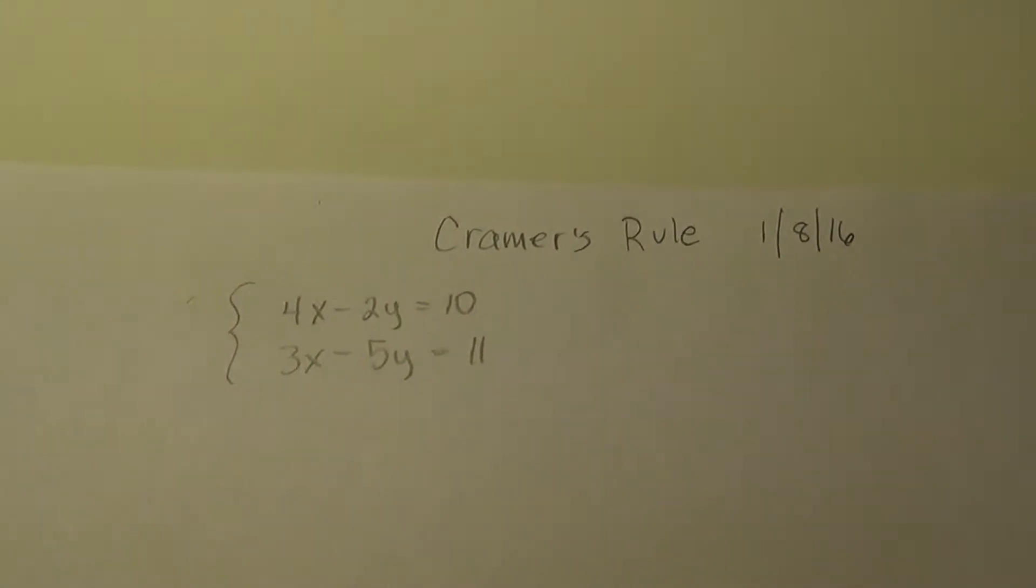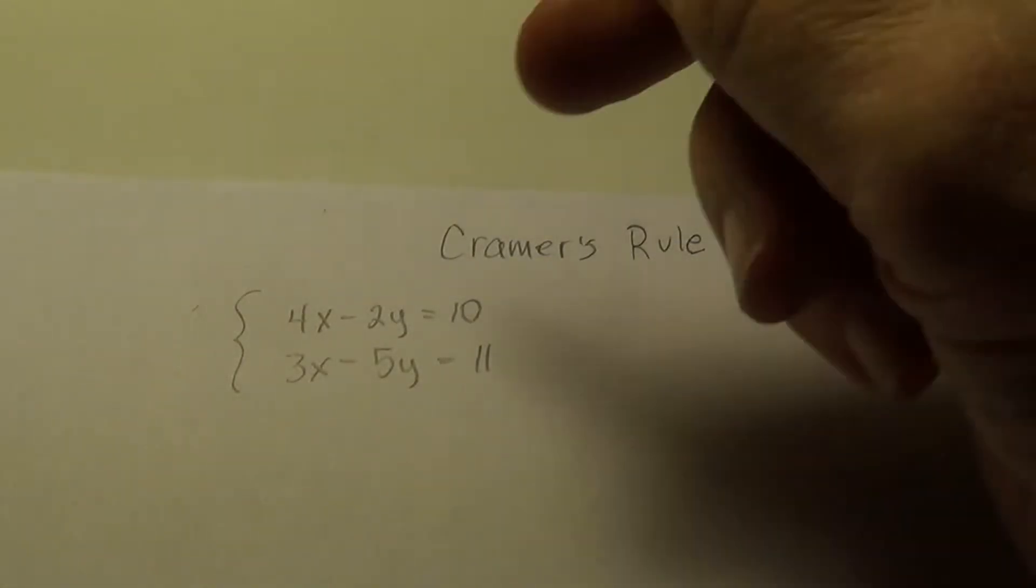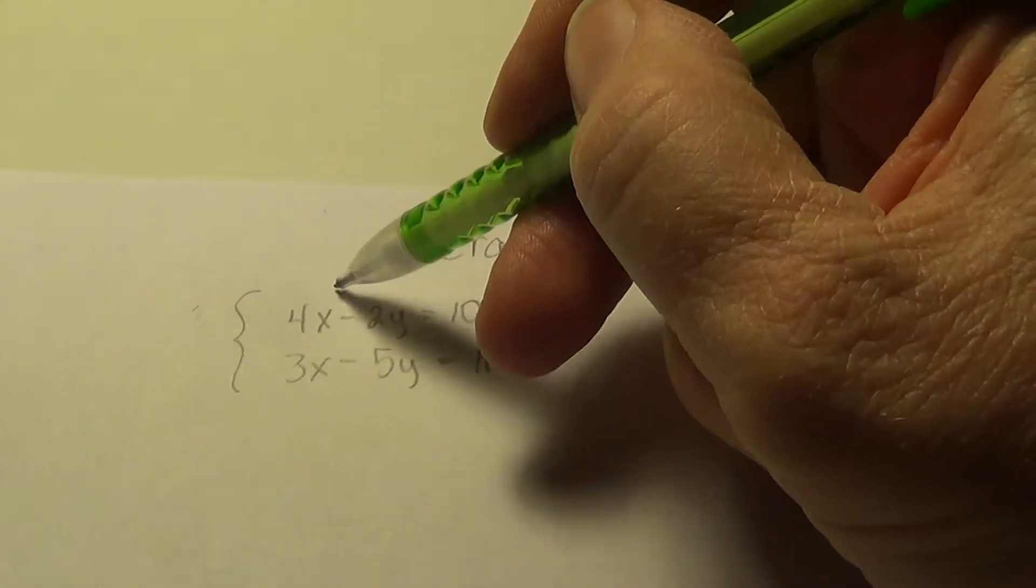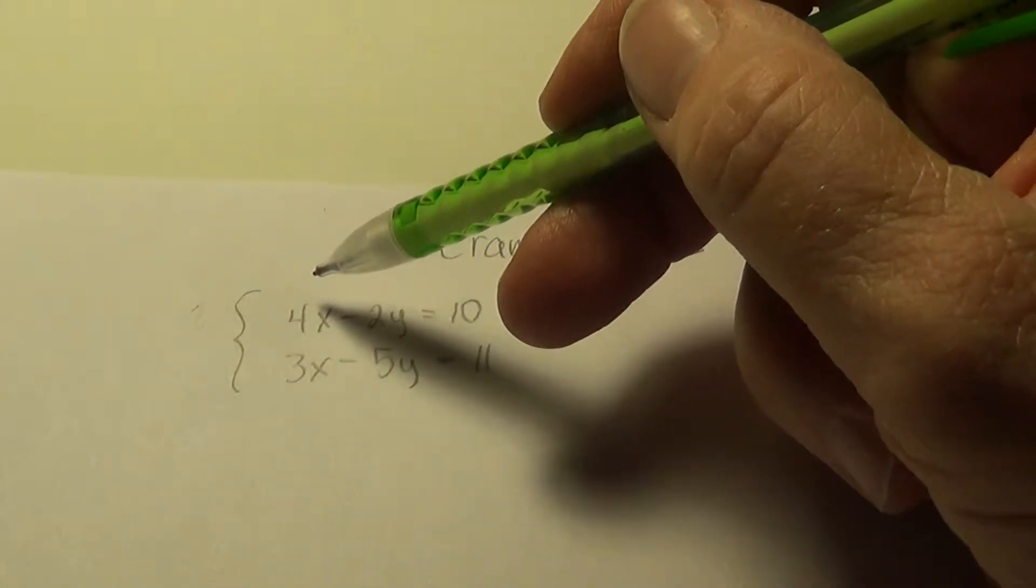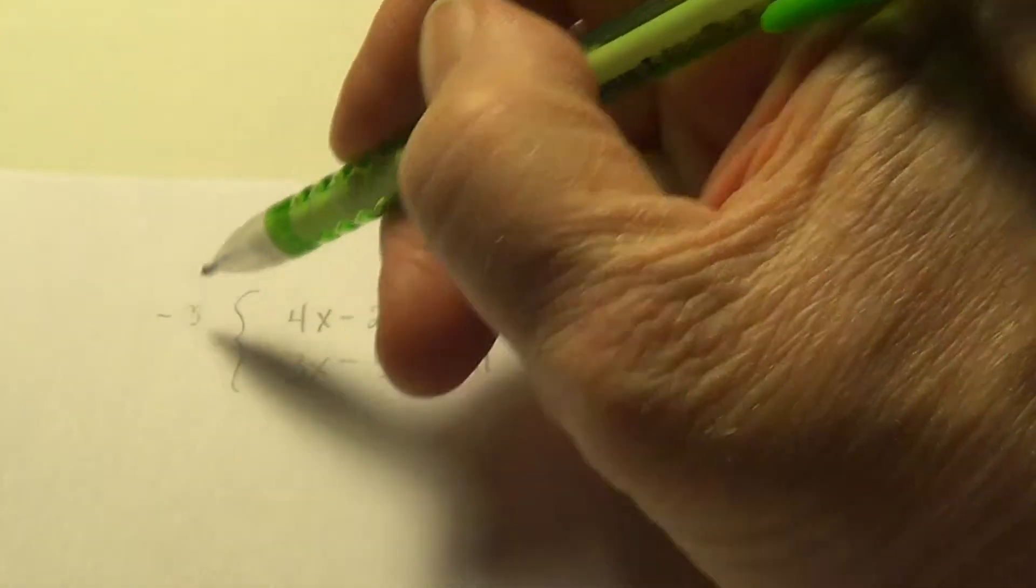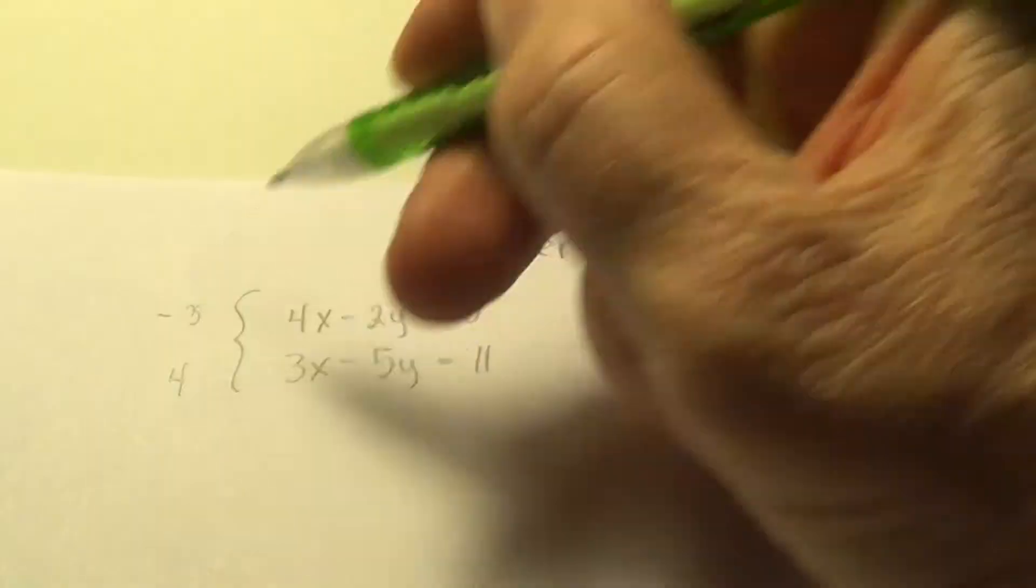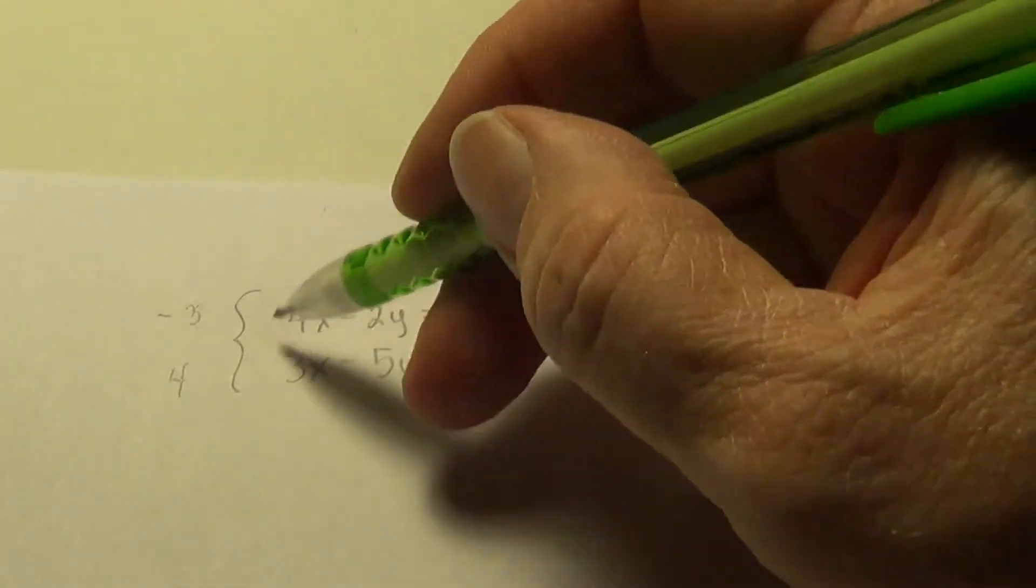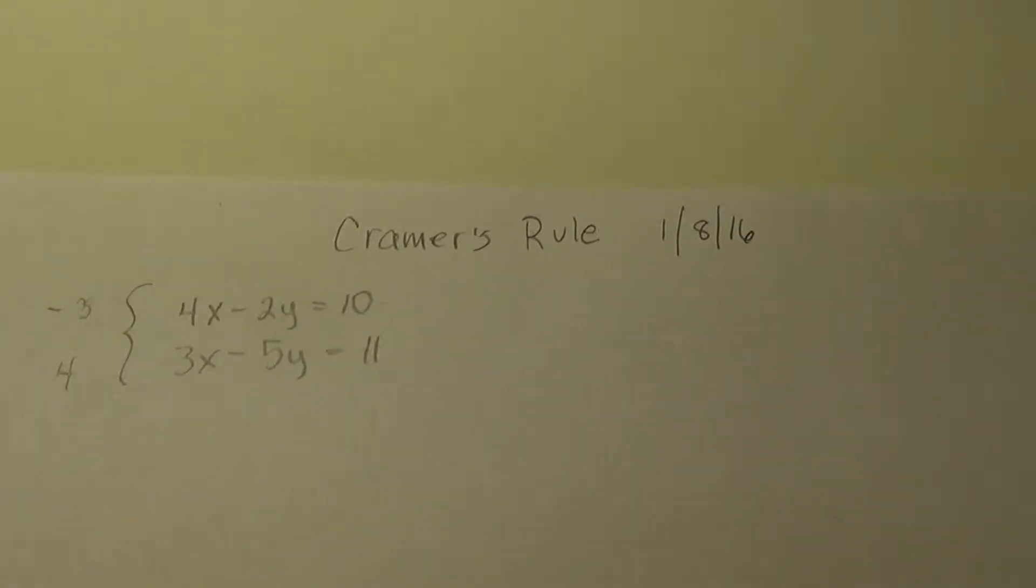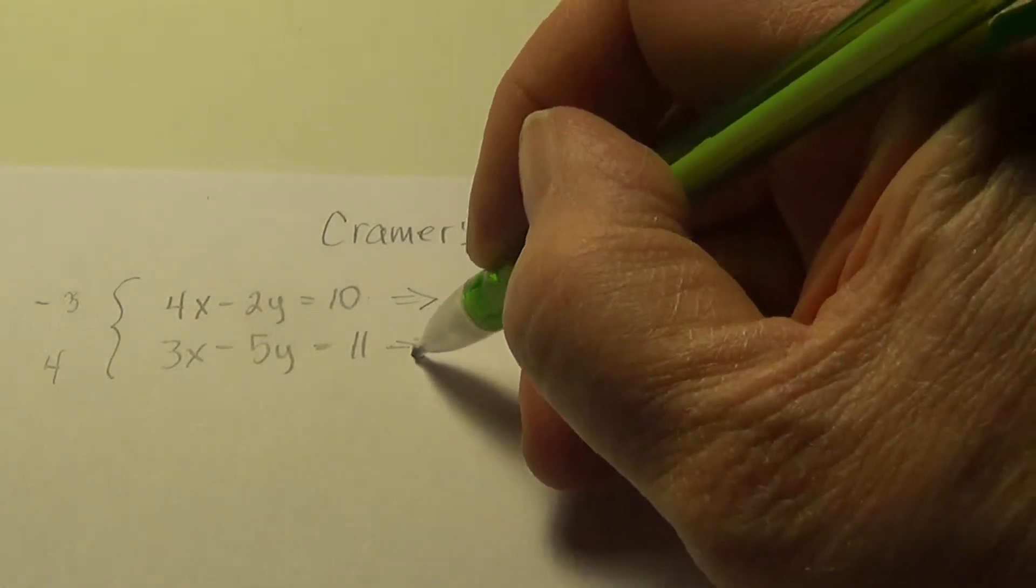So here we have a system of two equations and two unknowns, and in the olden days, before we were thinking about matrices, we would solve this by substitution or elimination. I haven't taught this this year. You should come knowing this, but I will review a quick rendition of how to solve this. If I multiply the top equation by negative 3 and the bottom by 4, that will create the x terms so that they will cancel out, zero out when I add them.